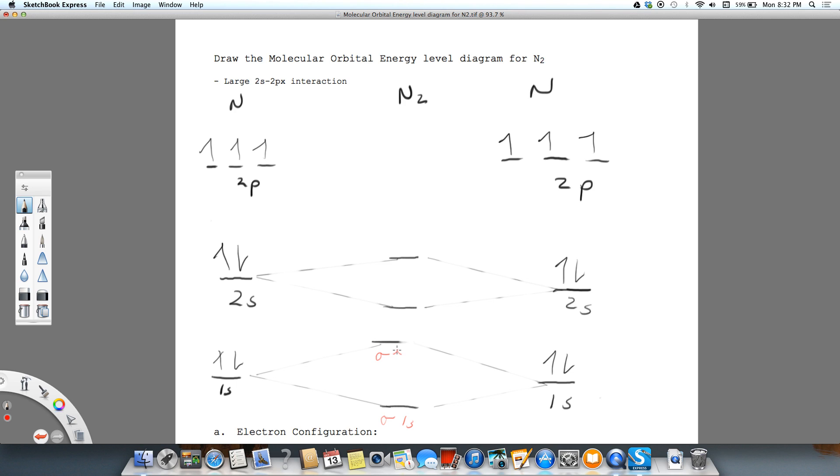And then our second will be sigma 2s that will be bonding and sigma star 2s that will be a non-bonding orbital where there's no overlap.